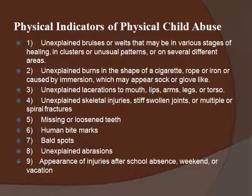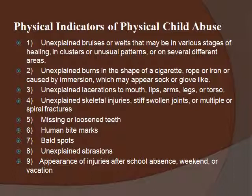Here are some physical indicators of physical child abuse. The first is unexplained bruises or welts that may be in various stages of healing, in clusters or unusual patterns, on several different areas of the body. Unexplained burns in the shape of a cigarette, rope, or iron, or caused by immersion, may appear sock- or glove-like. If it looks like a child is wearing a red sock or red glove, it means their hand or foot was put into hot water and held there.